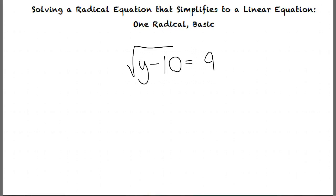You are correct in that our first step is to remove the square root. We square both sides of our equation, which results in y minus 10 equals 81. From there, we will isolate our y variable by adding 10 to both sides, which results in our final answer of y equals 91.